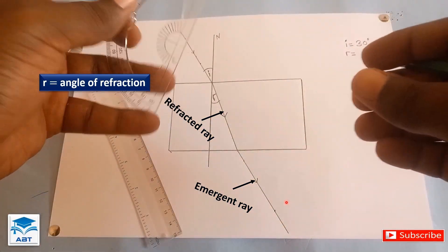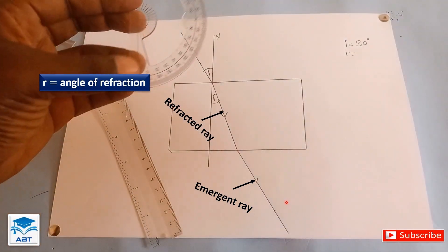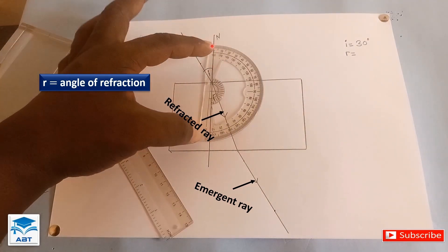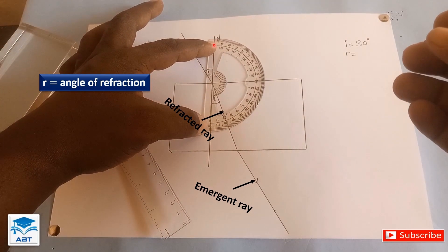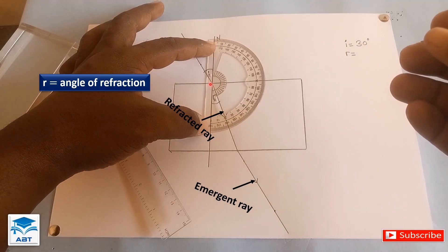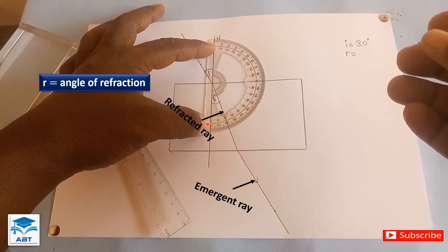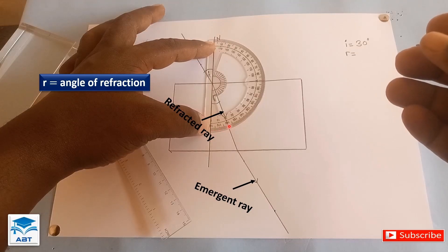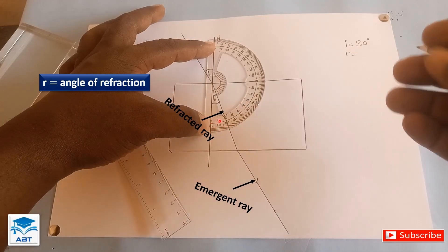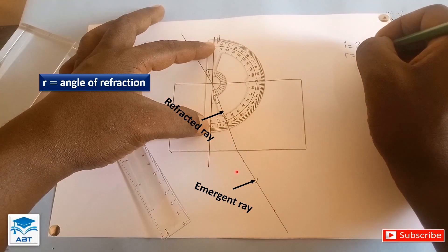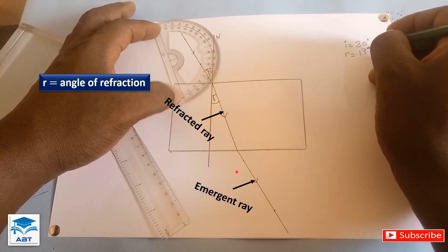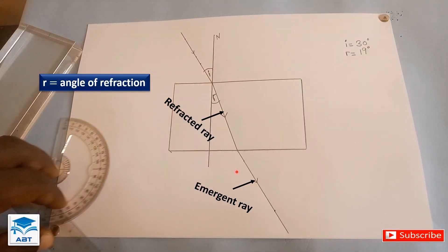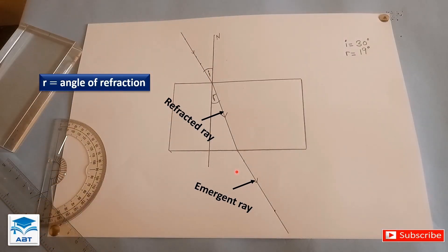We are going to measure the angle of refraction. So we put the baseline of the protractor on the normal and the point here on the point of incidence and we measure from this direction and we have 19 degrees. So the angle of refraction here is 19 degrees.